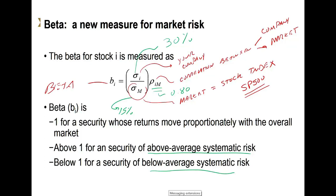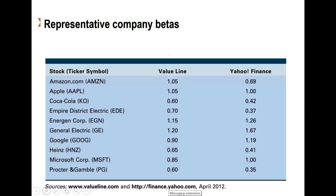The next recording will show you how we go about finding the beta for a company using actual market prices. Now, one issue with betas is that depending on where you go — Yahoo Finance or somewhere else — you may find different betas. For example, for GE, one source said the beta is 1.2, while another source says the beta is 1.67. That's not helpful. I always suggest you use a single source for your beta information; otherwise you're going to be jumping from value to value.